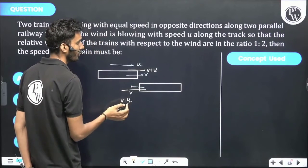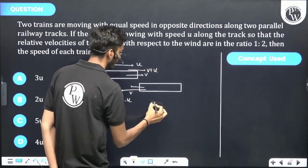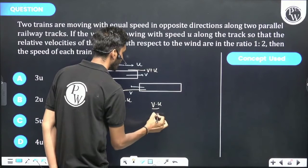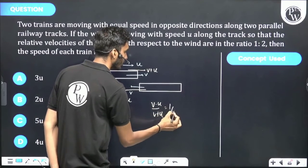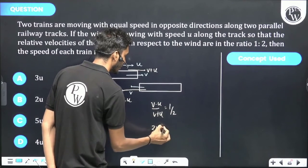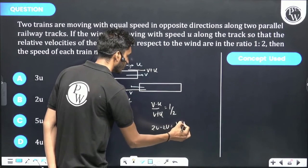And this ratio is 1:2. So v minus u upon v plus u, it is going to be 1 by 2. So 2v minus 2u is equal to v plus u.